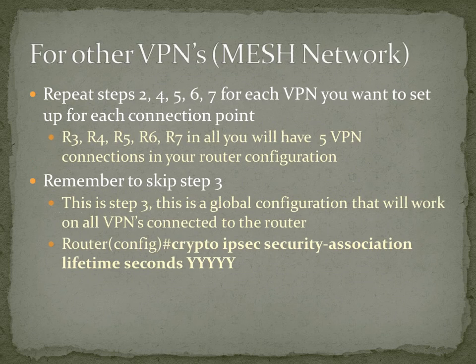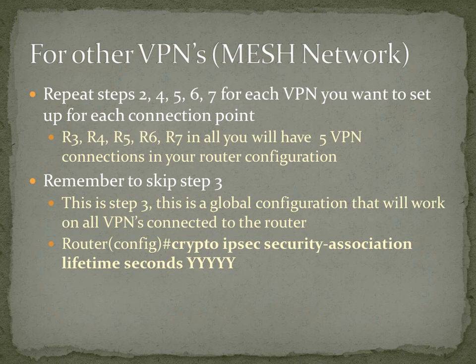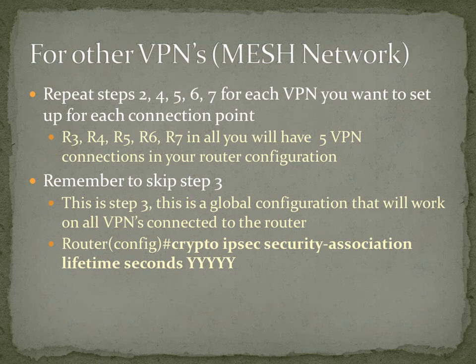For all the other VPNs you're going to create — basically creating a mesh network — repeat steps 2, 4, 5, 6, and 7 for each VPN you want to set up. So R3, R4, R5 — all of you will have five VPN connections in your router configuration when you're done. Remember to skip step 3, the lifetime seconds, because you only need to do that once.